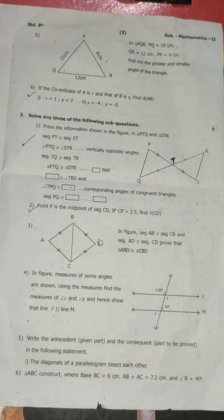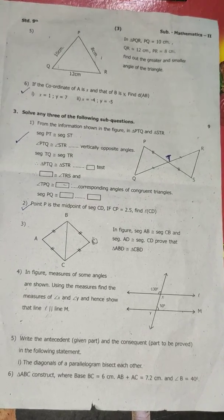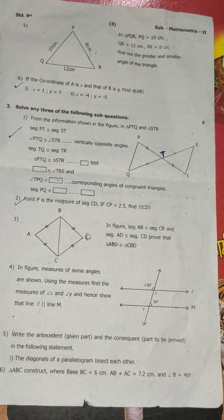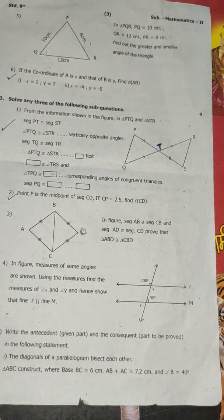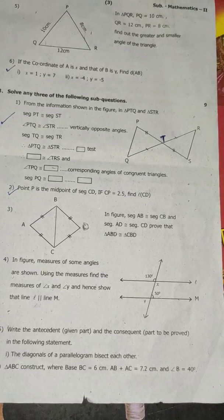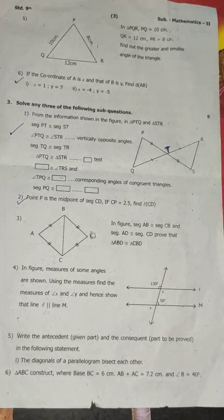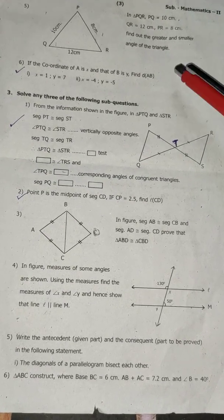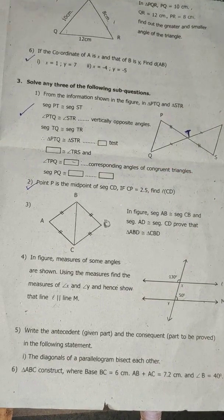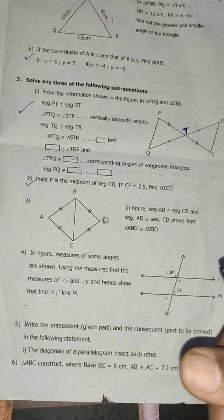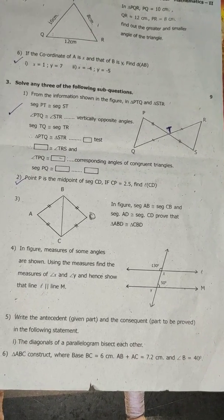In angle PQR, PQ is equal to 10 cm, QR is equal to 12 cm, PR is equal to 8 cm. Find out the greater and smaller angle of the triangle. If the coordinate of A is X and that of B is Y, find D(AB).